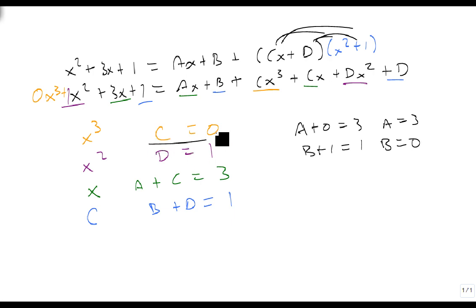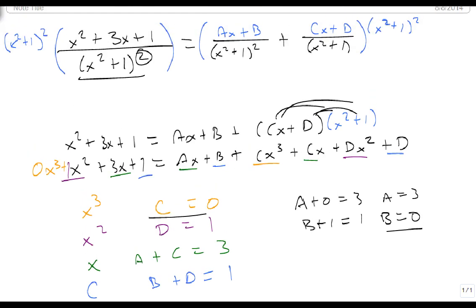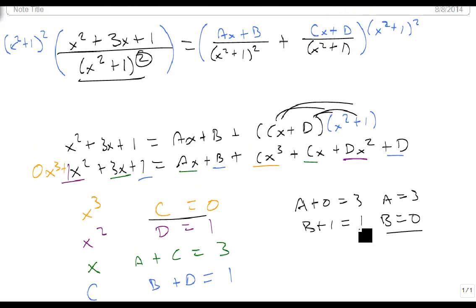So here, I've got some 0's, and it's okay to have 0's. I just need to come back in and make sure I take those into account when I write my answer. So I end up with Ax plus B over x squared plus 1 squared plus Cx plus D over x squared plus 1.